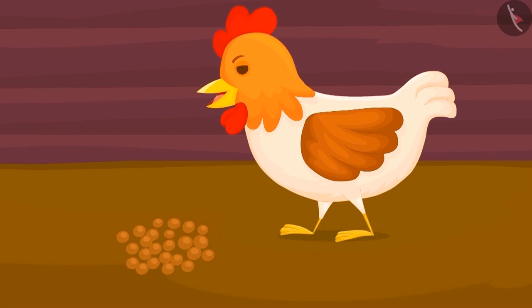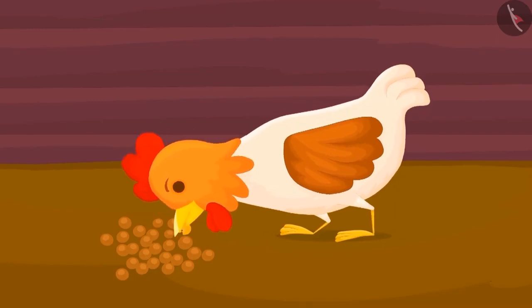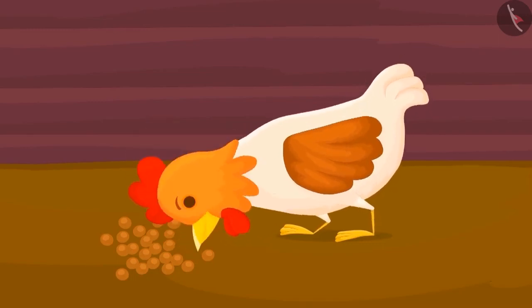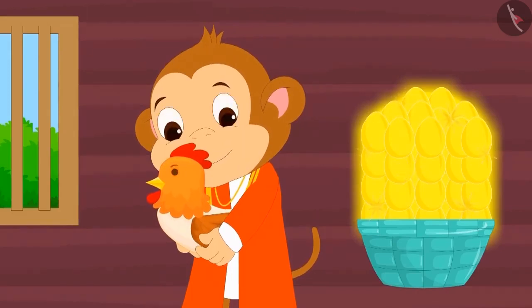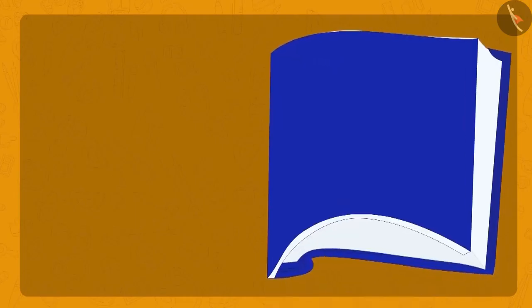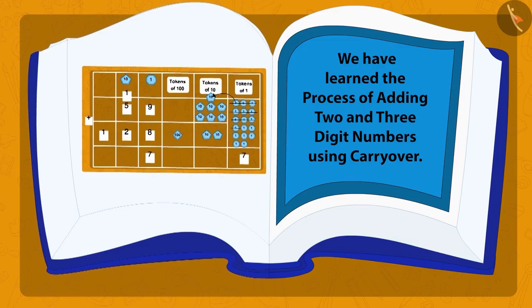Babban now started feeding his hen with fodder and the hen kept giving him more golden eggs. After all, Babban became the richest man in the village. Children, in this lesson we have learned the method of adding two and three-digit numbers using the carry-over method.